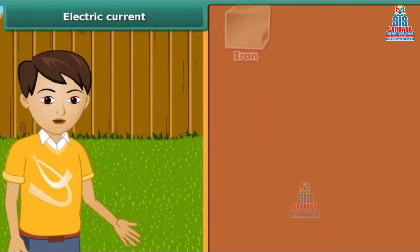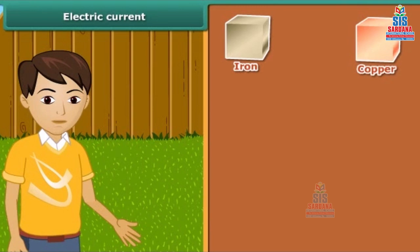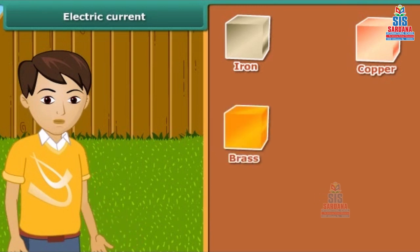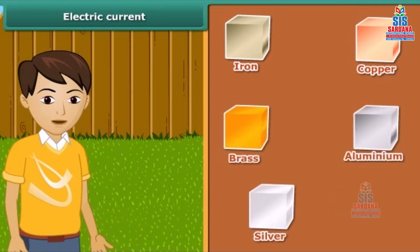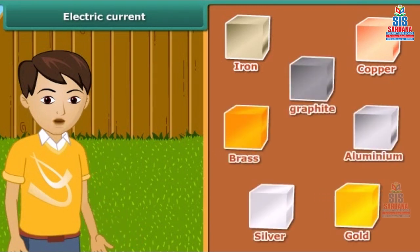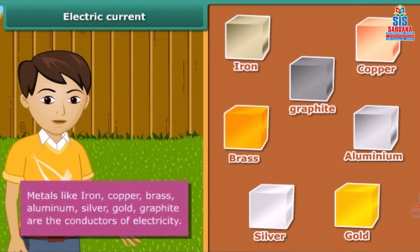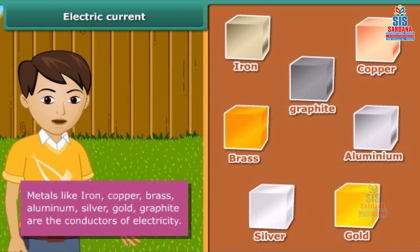Iron, copper, brass, aluminium, silver, gold, and graphite are conductors of electricity. The materials through which electric current doesn't flow are called insulators.